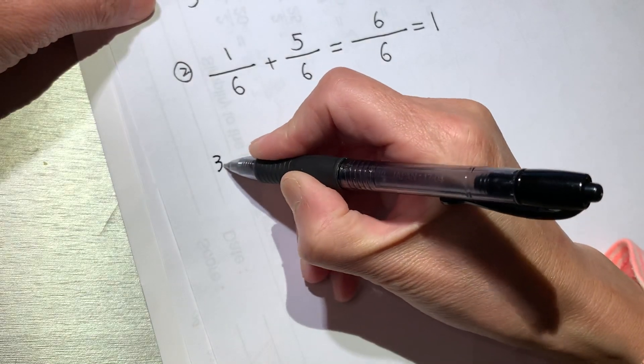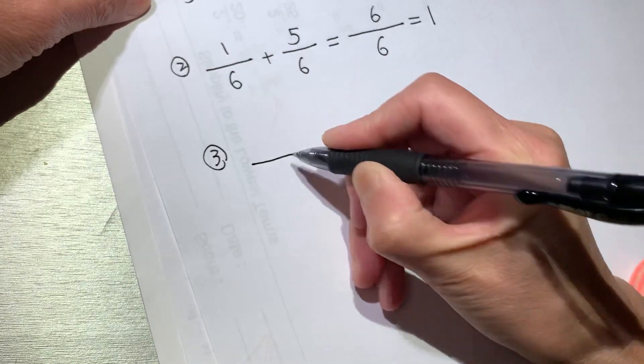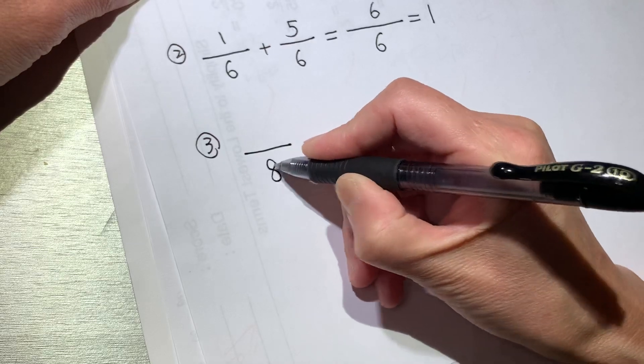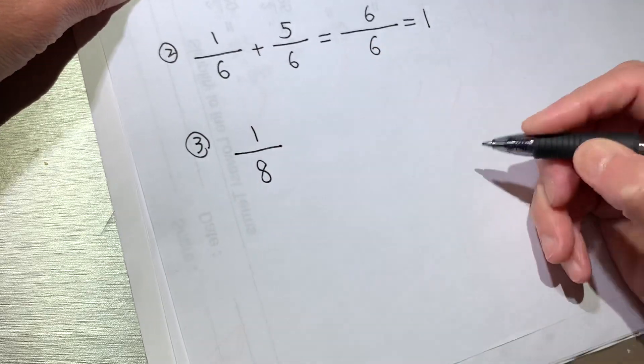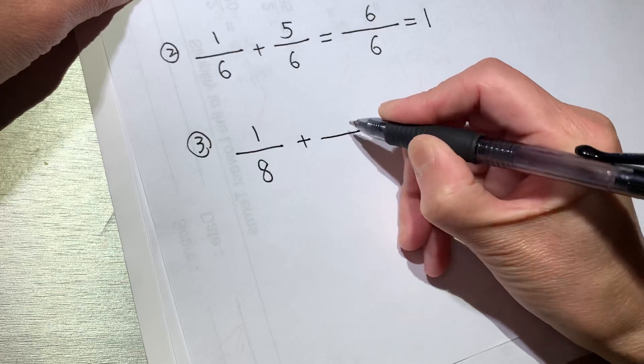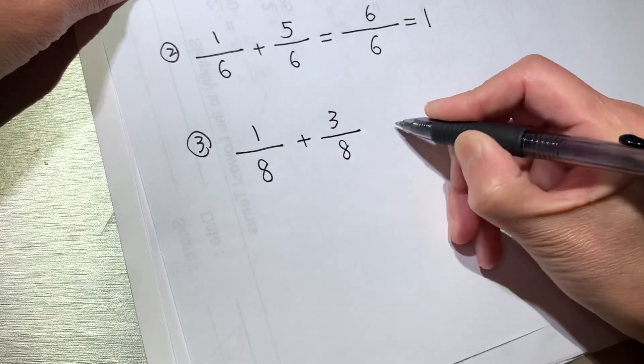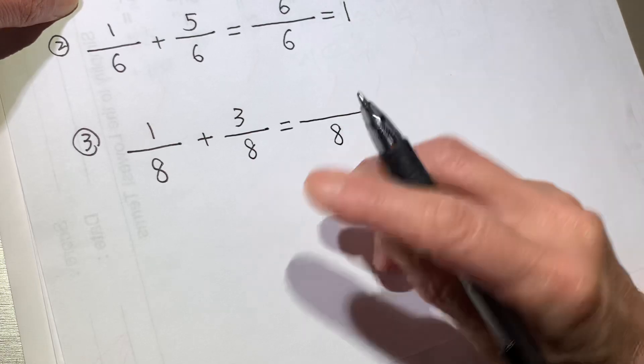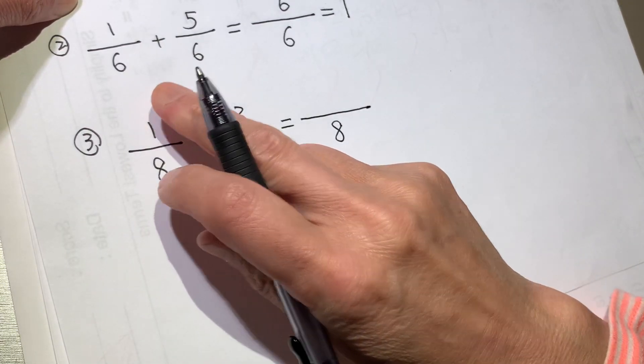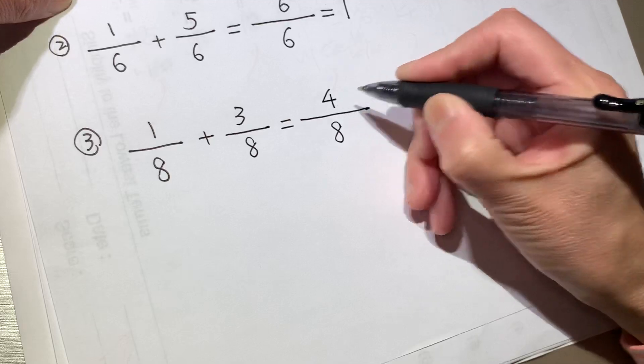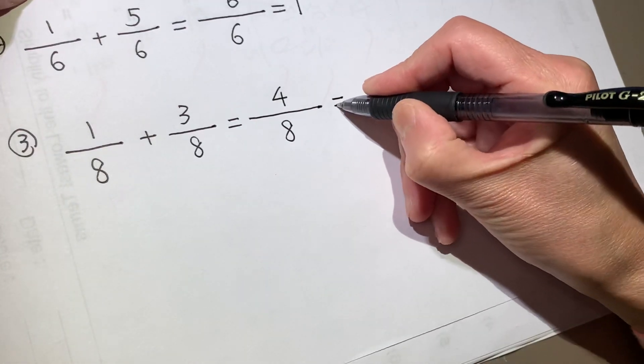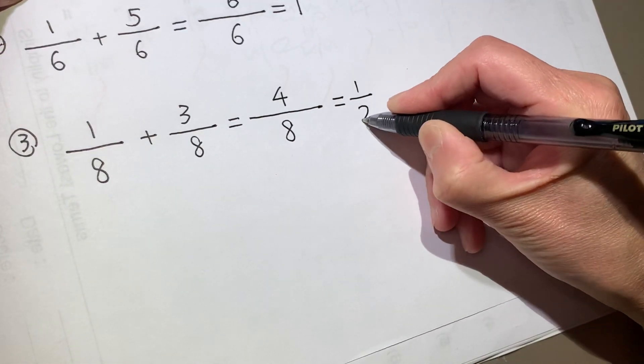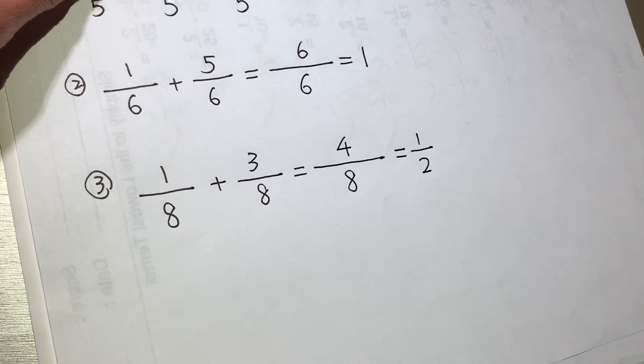Now we see the third example. This is 1 over 8 plus 3 over 8. So the denominator is the same. Go ahead, write it down. 1 plus 3 is 4. And now we can simplify, which is half. Easy peasy, lemon squeezy.